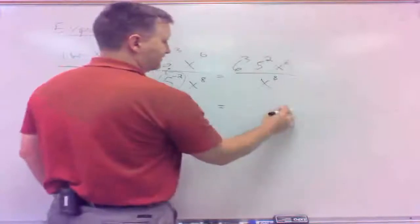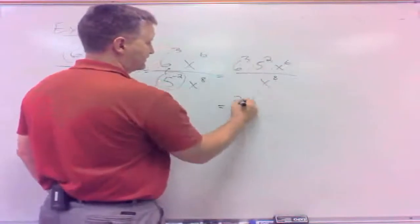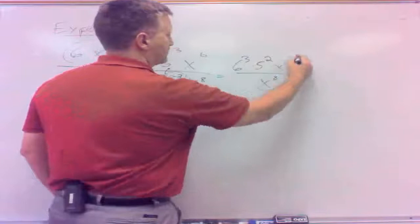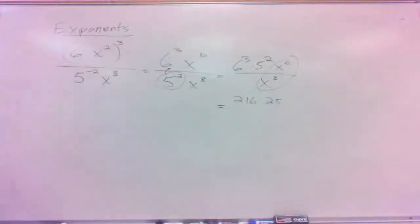Those are just ones we'd evaluate. That'd be 216 times 25. Now, what's the rule on that? Same base, but they're divided. That's subtraction, isn't it? We subtract the exponents.